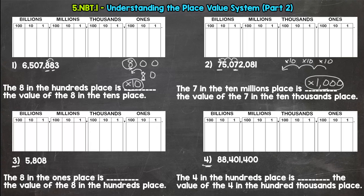So number 3, the 8 in the ones place. I'm going to put an 8 in the ones place here. Is blank the value of the 8 in the hundreds place. So we are comparing this 8, 8 in the ones to the 8 in the 800. We're actually going decreasing in value.